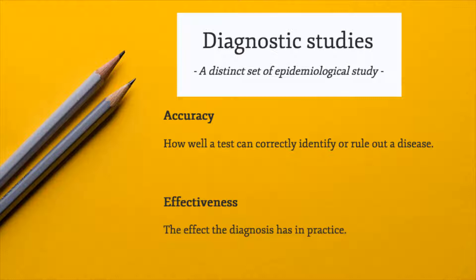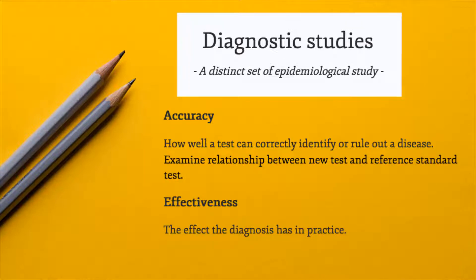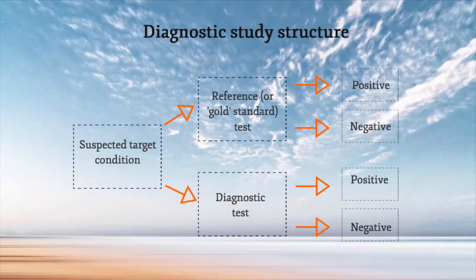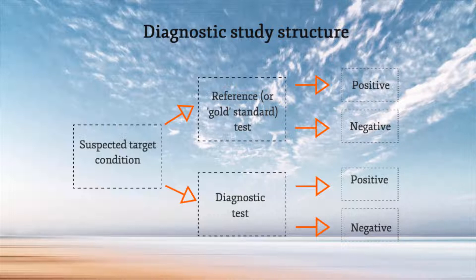Diagnostic studies may examine the diagnostic accuracy and relationship between the new test and the reference standard, also known as the gold standard test, or the effectiveness of a test in reducing the occurrence of a health problem — investigating whether a new test does more harm than good to patients. Although they can vary in their design, diagnostic tests should ideally be compared within the same patients, or if this is not practical, on randomised groups from the same population of patients. This ensures that differences in observed test results are because of the tests, rather than differences in characteristics of patients or study methods.